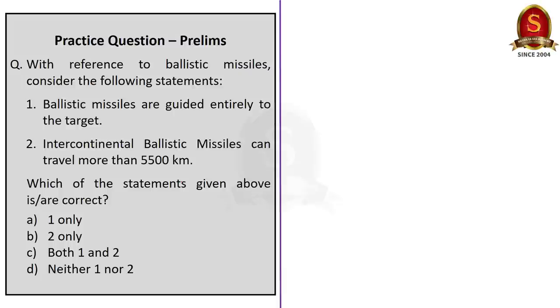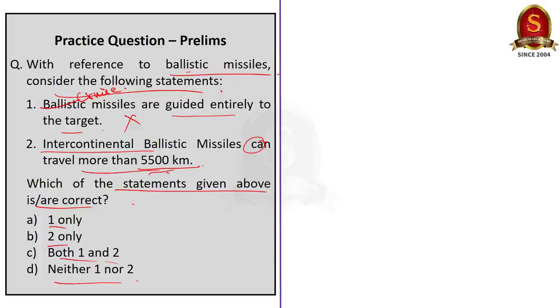Now let's solve some of the prelims practice questions. Look at the first question. With reference to ballistic missiles, consider the following statements. Ballistic missiles are guided entirely to the target. And the second statement is intercontinental ballistic missiles can travel more than 5,500 km. Which of the following statements are correct? One only, two only, both one and two, neither one nor two. See the statement one, it is regarding cruise missile. Cruise missiles are guided entirely to the target. It is not ballistic missile. So option one is incorrect. We have seen that intercontinental ballistic missile can travel more than 5,500 km. This is a fact friends. So option two is correct. So our answer will be option B, two only.